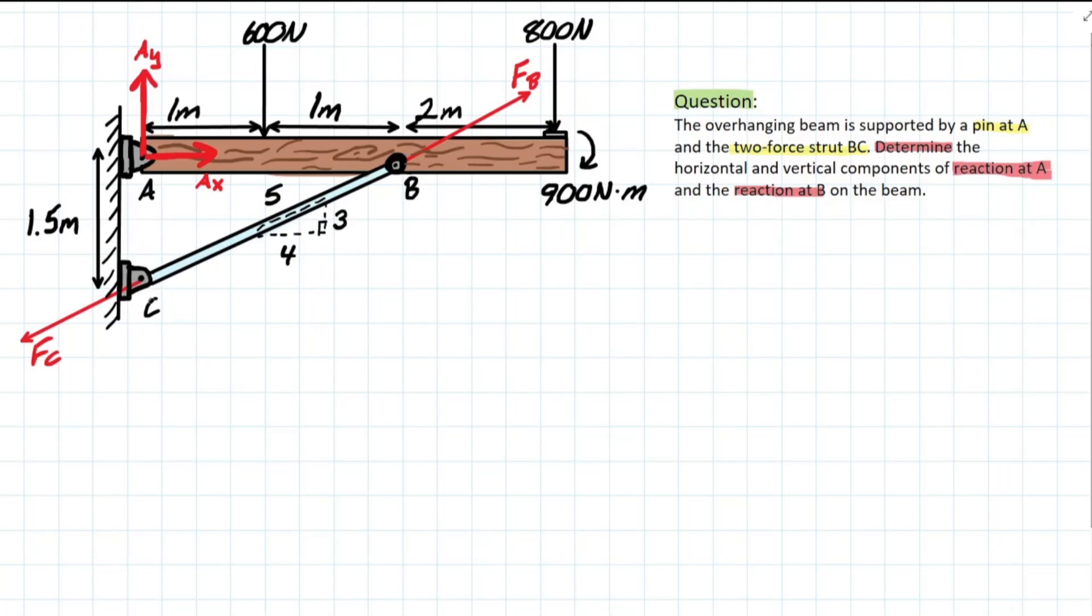But why didn't I draw it for C? This is because the reactions at C are going to have no impact on the values for the reactions at A or B. Only FC matters and FB matters. And since FB is going to equal FC, we don't even need to consider this. So now we can actually get into this problem. We have a lot of different unknowns. So the first thing that jumps out to me is to solve for summation of moment is equal to zero. And we have two components at the A point. So it'd be easiest to take it from A, which means we can solve for FB.